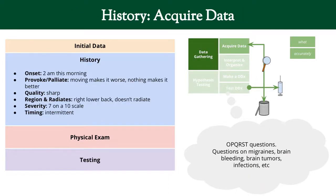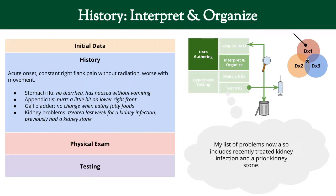So now we move on to our history and we use our OPQRST framework. It started at 2 in the morning, it's worse by moving, nothing makes it better, the pain is sharp. It starts in the right lower back and doesn't go anywhere from there. It's rated 7 out of 10 and it's intermittent. That was us accurately acquiring the OPQRST data.